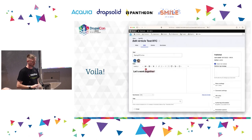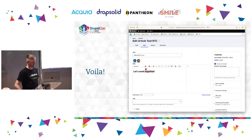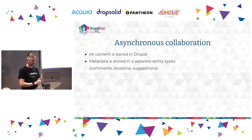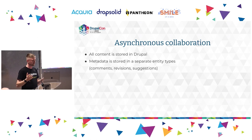Once configured, you'll see four new buttons you can add to your toolbar: Comments, Comments Archive, Track Changes, and Revision History. There are some additional configuration options for those, and once set up, multiple people can work on the same piece of content immediately with no additional steps required.